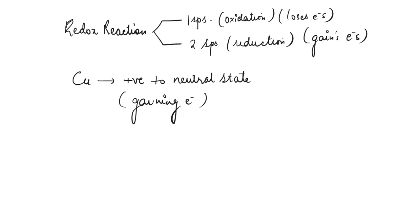The charge of the copper was positive and it went to neutral state, so it has gained electrons. Gaining electrons, as I earlier told, means reduction took place.